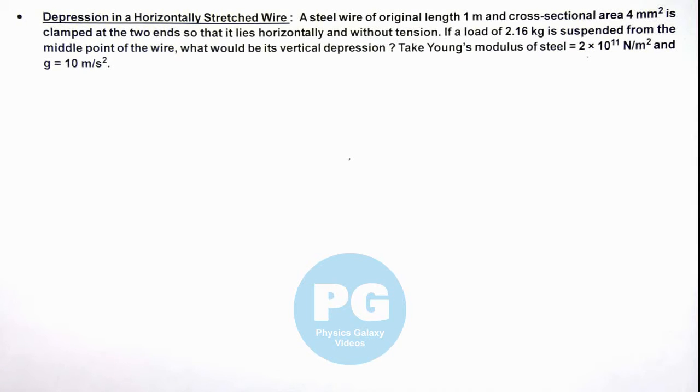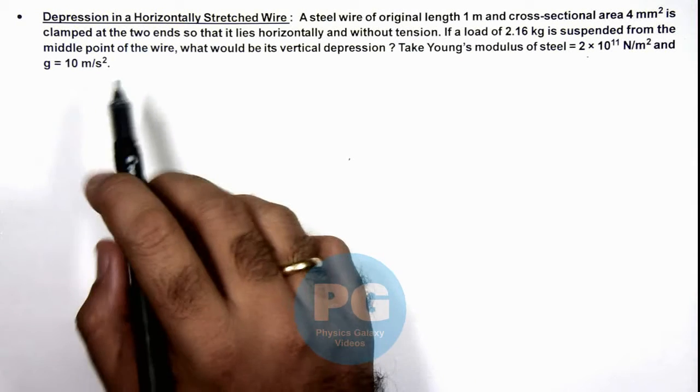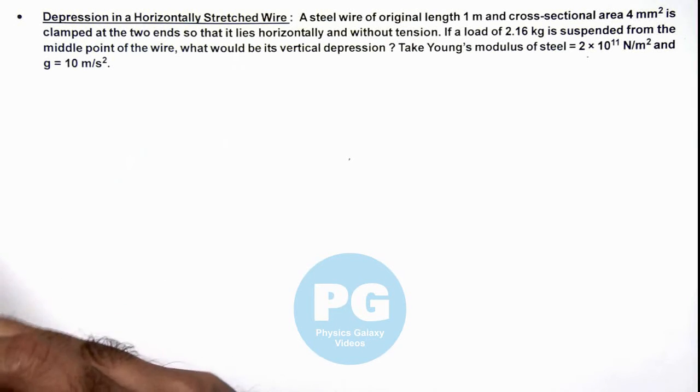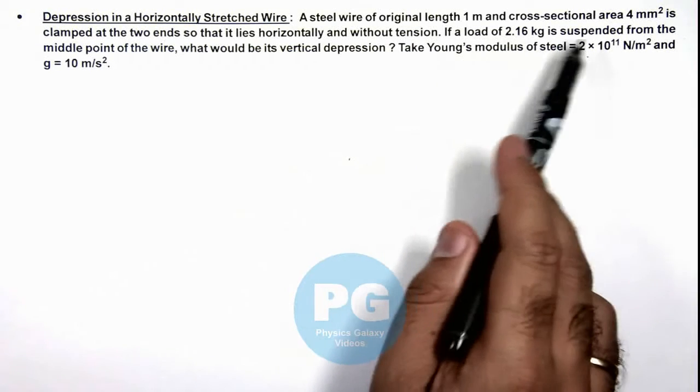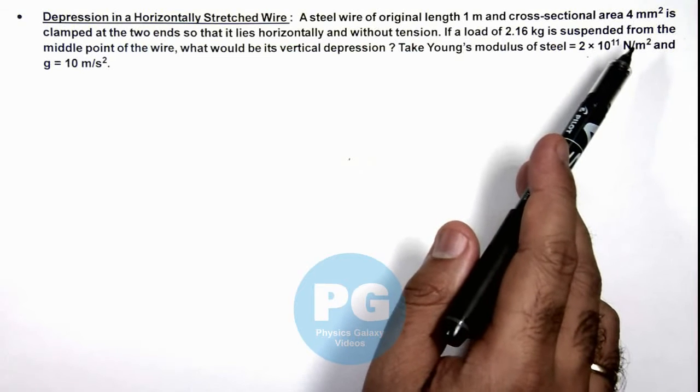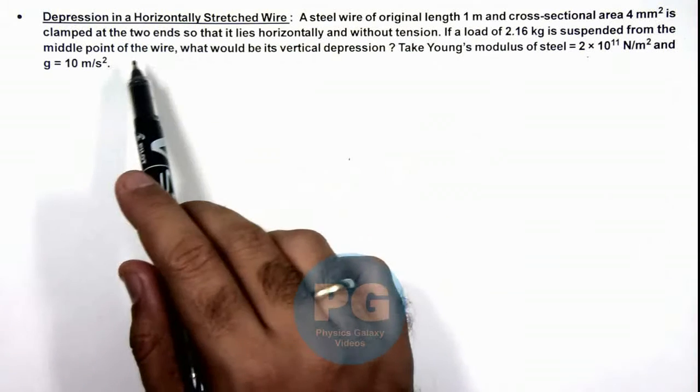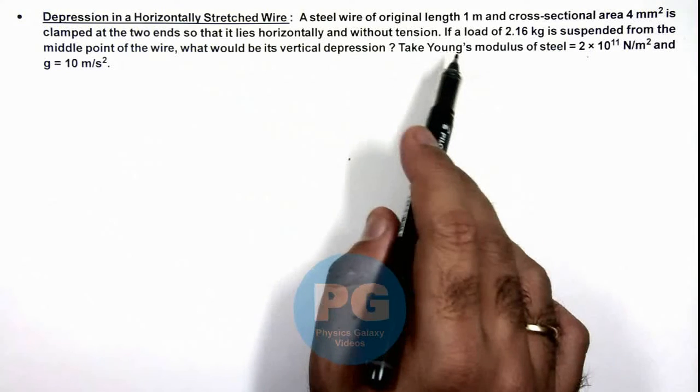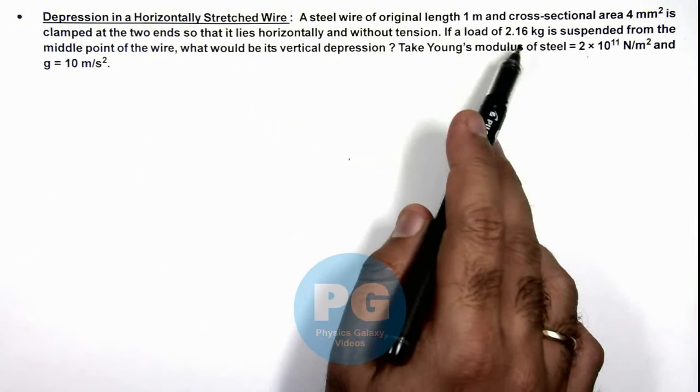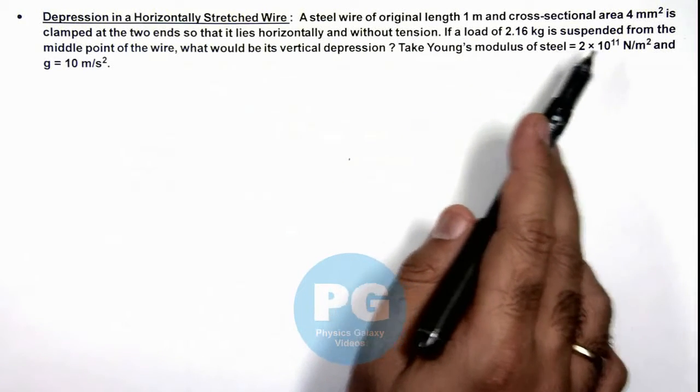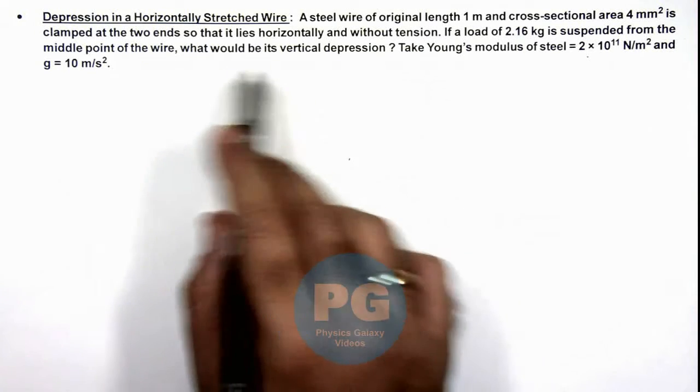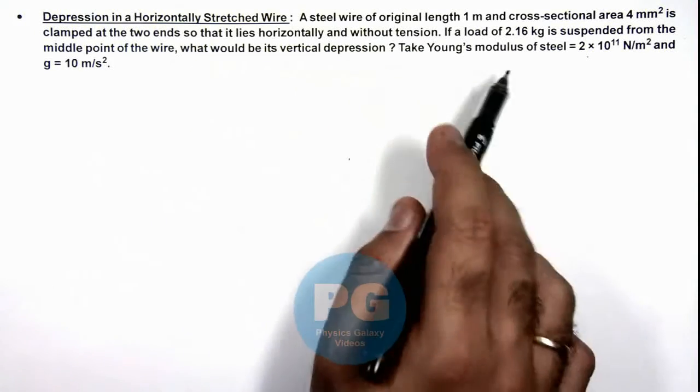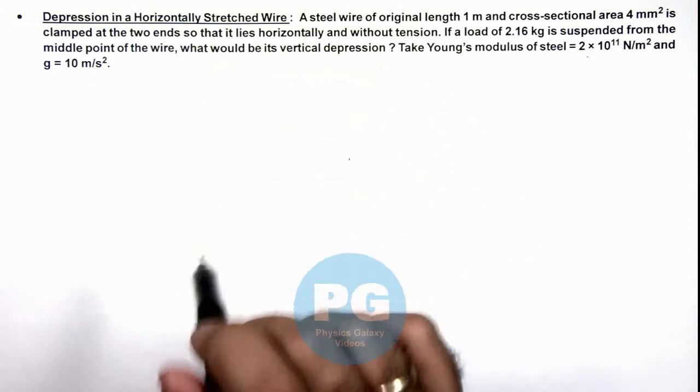In this illustration, we'll discuss the depression in a horizontally stretched wire. We are given that a steel wire of original length 1 meter and cross-sectional area 4 mm square is clamped at the two ends so that it lies horizontally and without tension. Further, it is saying if a load of 2.16 kilogram is suspended from the middle point of wire, we are required to find what would be its vertical depression. The Young's modulus and g is also given to us.